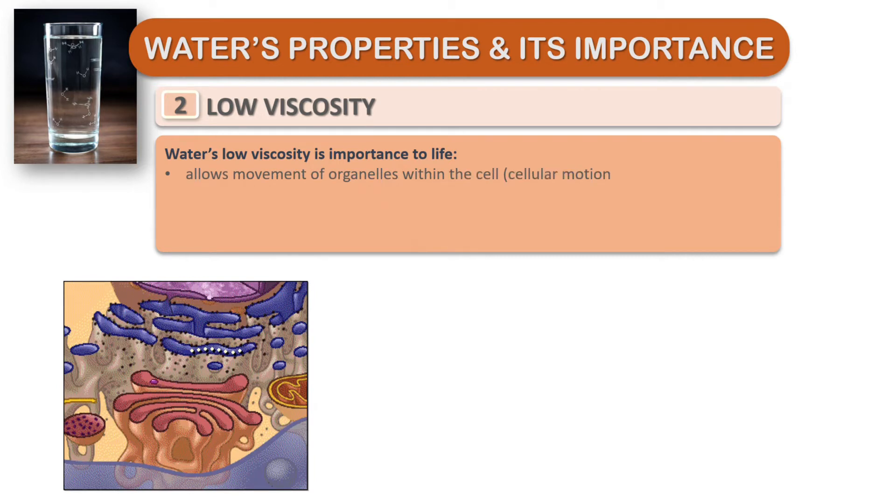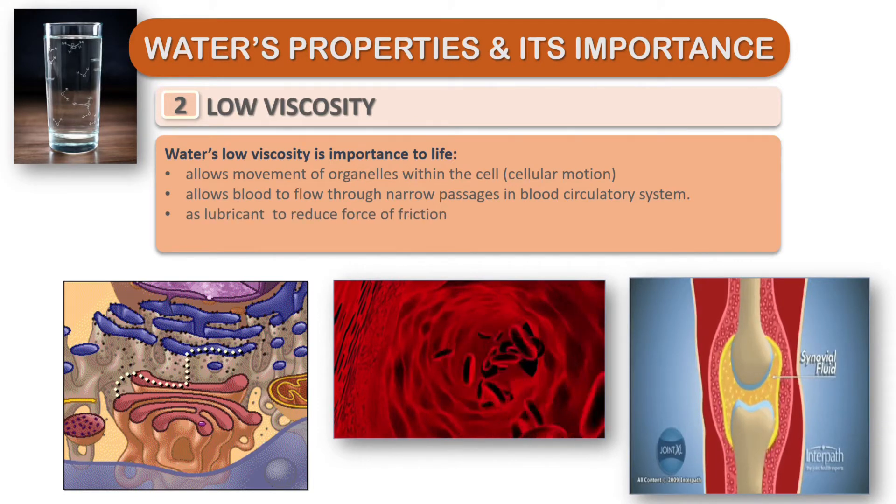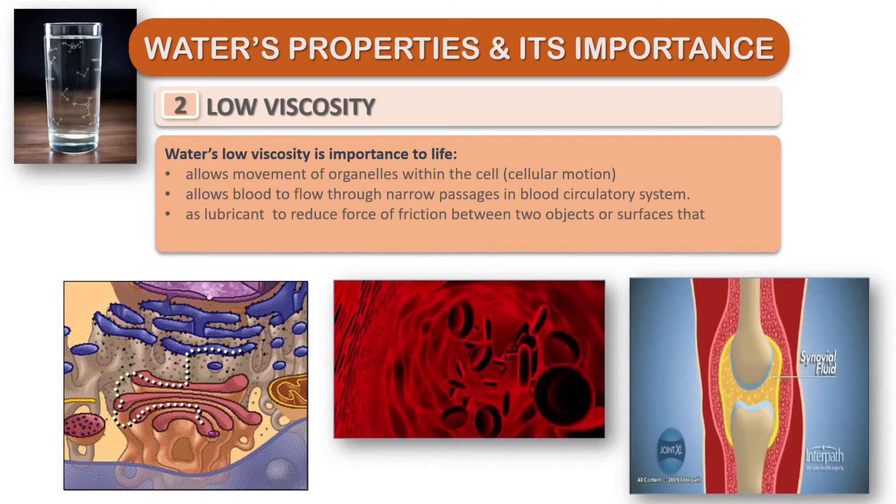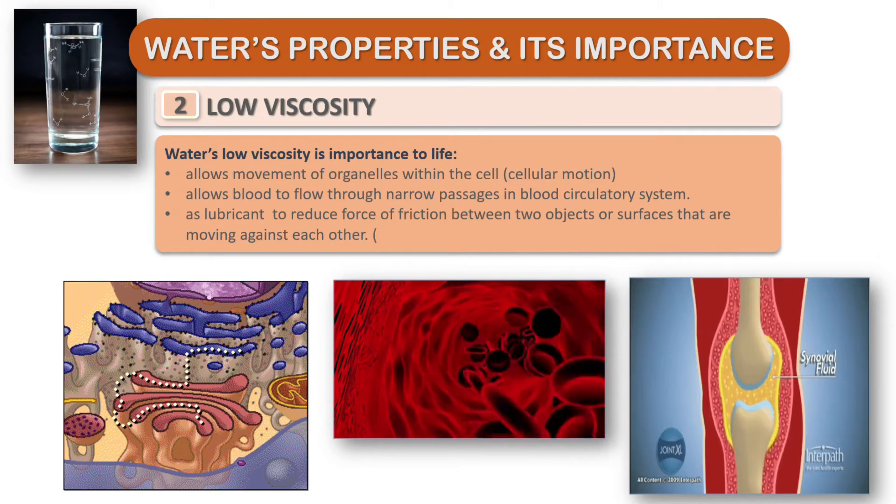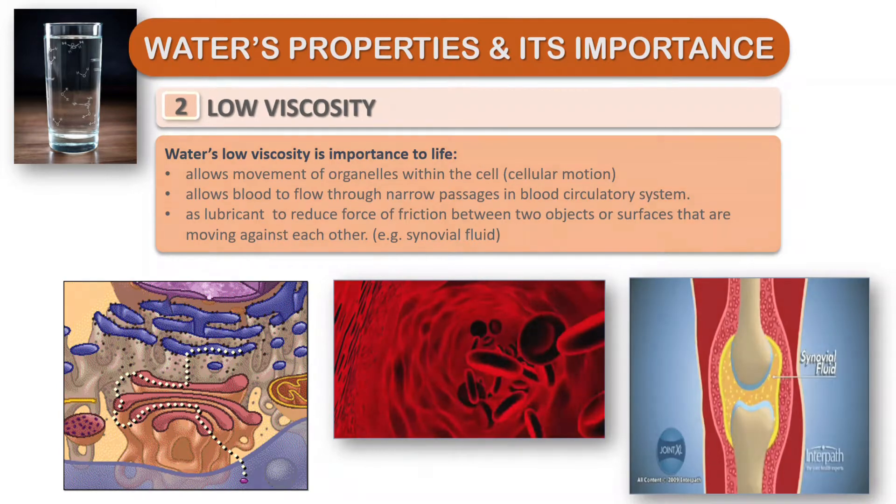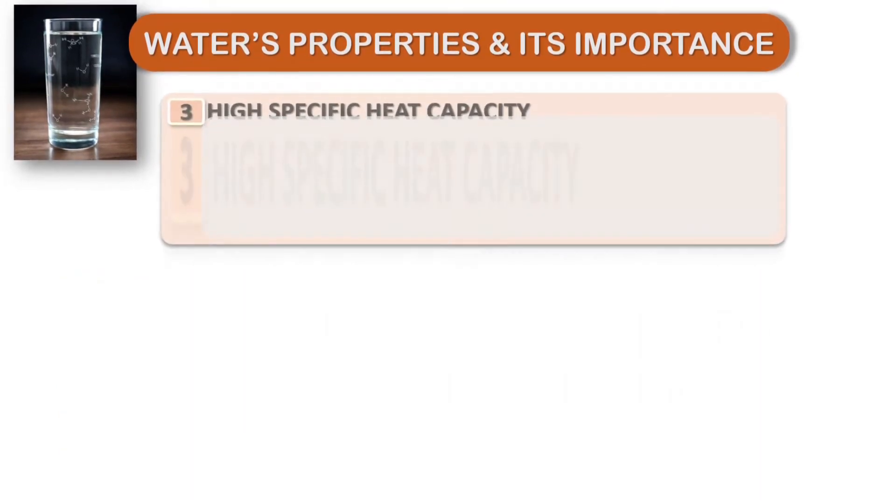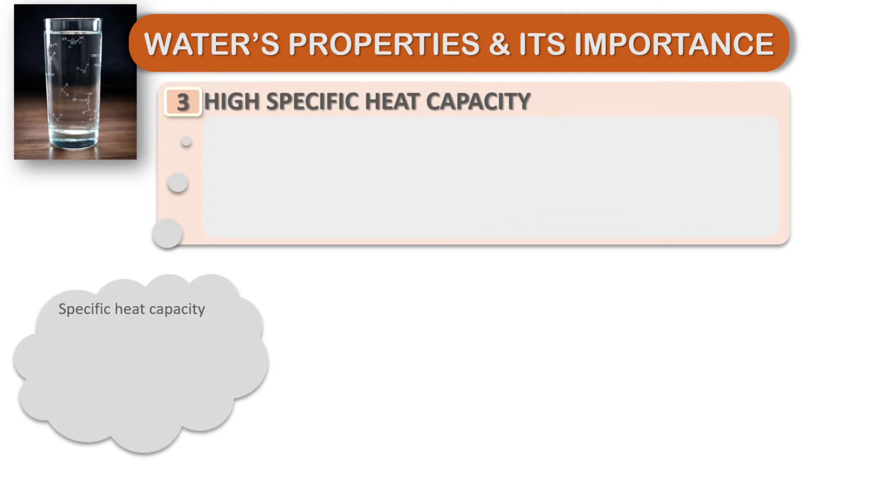Water's low viscosity is important to life because it allows movement of organelles within the cell, also known as cellular motion. It also allows blood to flow through narrow passages in blood circulatory systems. Furthermore, it acts as a lubricant to reduce the force of friction between two objects or surfaces that are moving against each other, for example synovial fluid at the knees.